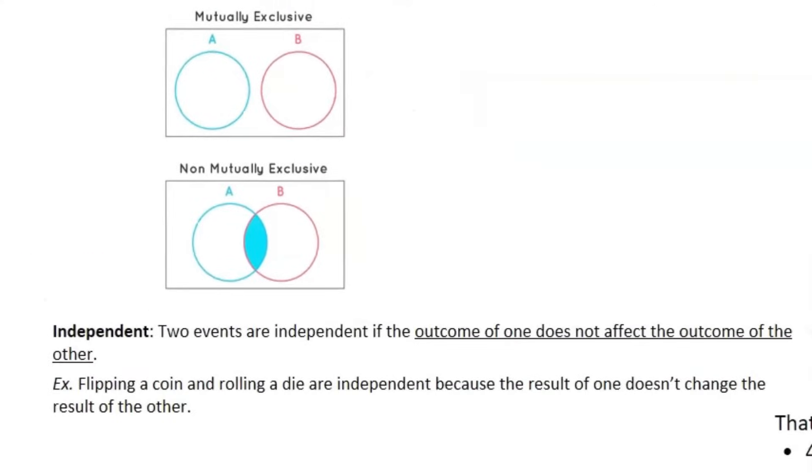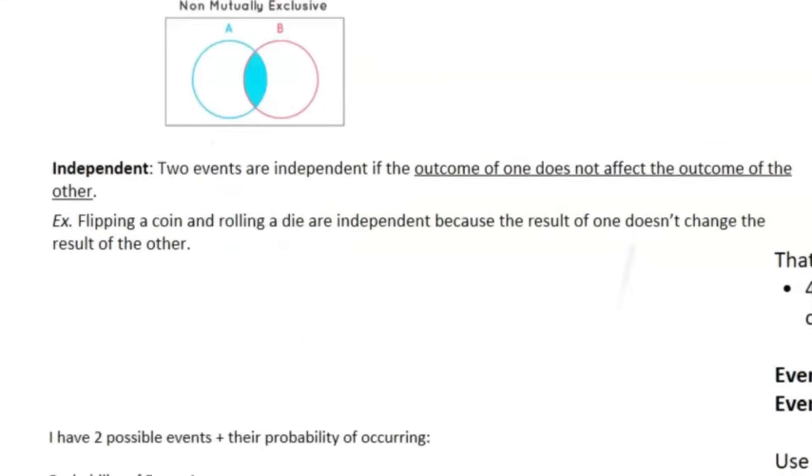The next one is independence. So two events are independent if the outcome of one does not affect the outcome of the other. So for example, if I flip a coin and I roll a die, the result of one does not change the result of the other. If I flip a coin, whatever I get, head, tails, whatever, me rolling a die, because I flipped a head or because I flipped a tails, that doesn't change what I'm going to get or the probability of what I'm going to get on the die.